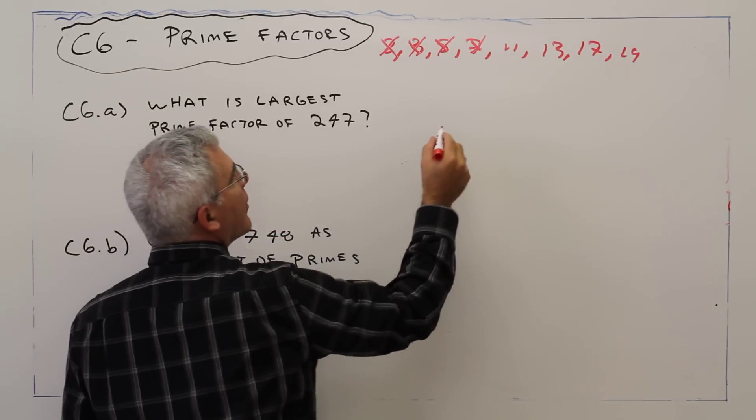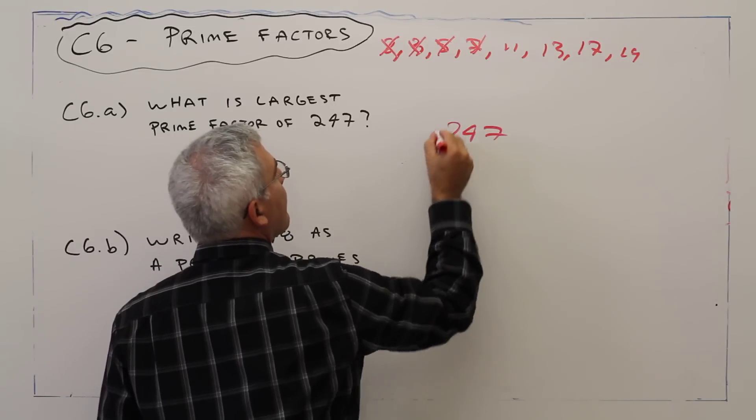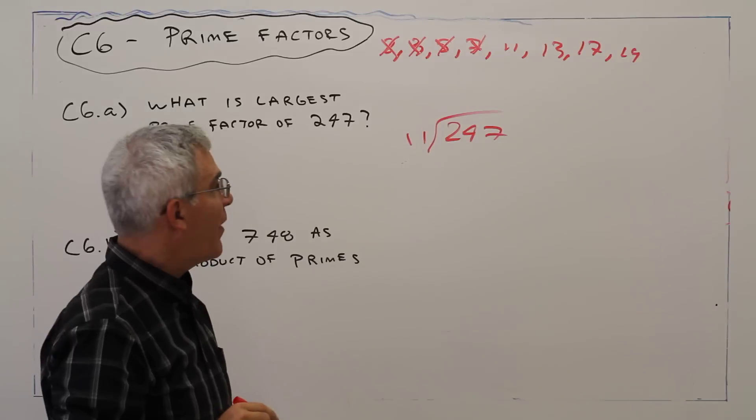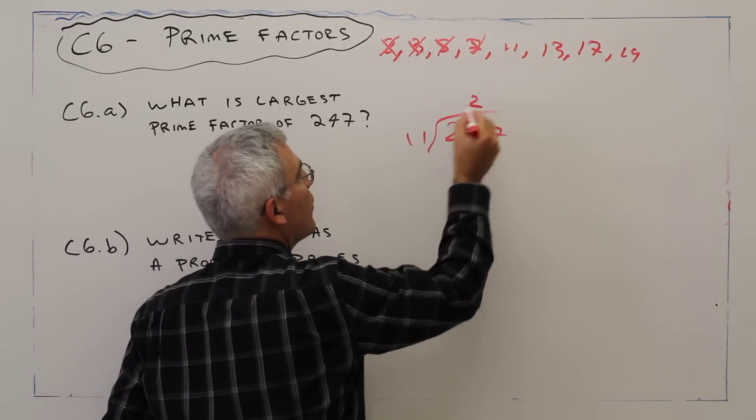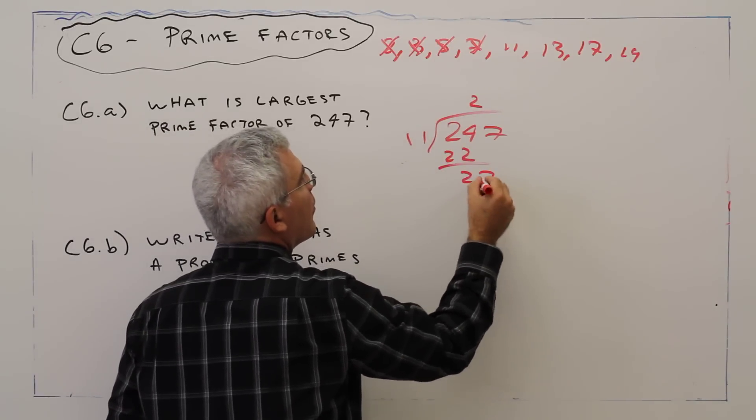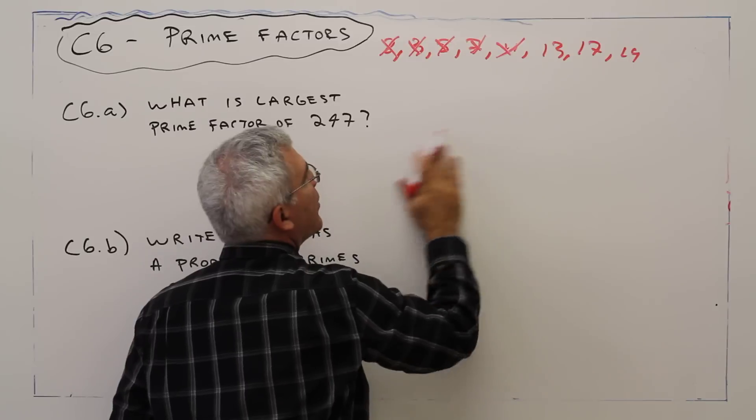Let's try 11. 247 divided by 11, 2, 22, 27, nope. Let's try 13.